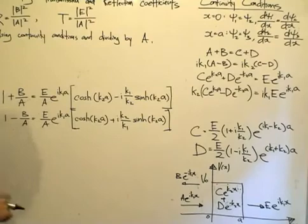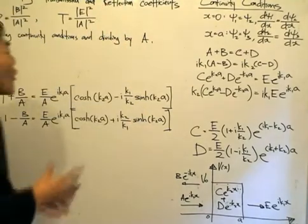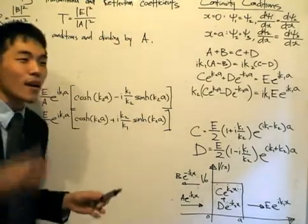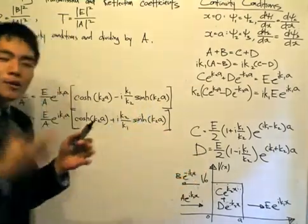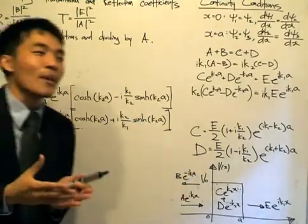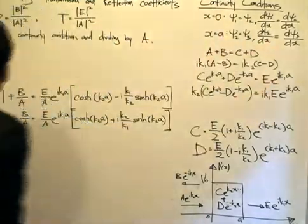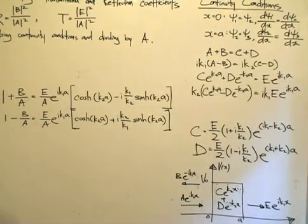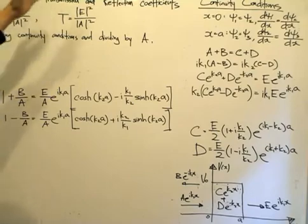The objective of today is calculating transmission and reflection coefficients, because it is these coefficients that tell us whether a particle manages to penetrate the potential barrier, or more specifically, what is the ratio of particles that enter the barrier and exit on the other side. The reflection coefficient R is given by the magnitude of B squared divided by the magnitude of A squared, and the transmission coefficient T is given by the magnitude of E squared divided by the magnitude of A squared.